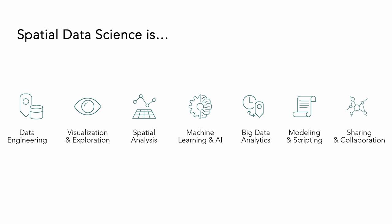We break spatial data science up into seven components. Everything from data engineering, where we are creating and managing our data to use in further analysis and modeling. It also includes visualization and exploration — how we get to understand our data and what questions we can even really ask with that data. Then we get to spatial analysis, the heart and soul of spatial data science, where we're asking questions, using methods, algorithms, and tools to dig deeper into our data.